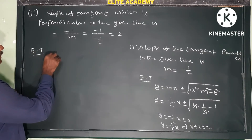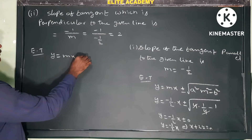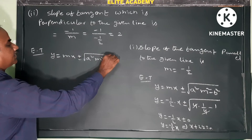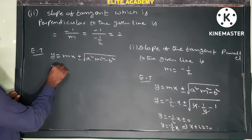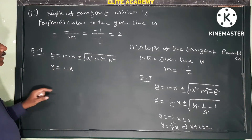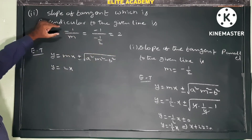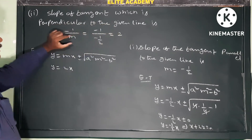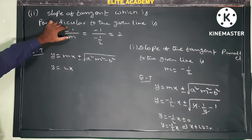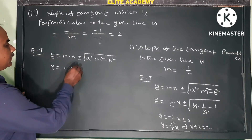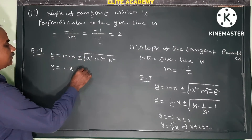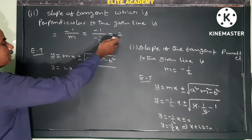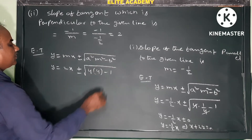Now find the equation of the tangent using y equals mx plus or minus square root of a squared m squared minus b squared. With m equals 2, a squared equals 4, and b squared equals 1: y equals 2x plus or minus square root of 4 times 4 minus 1, which equals square root of 16 minus 1 equals square root of 15.